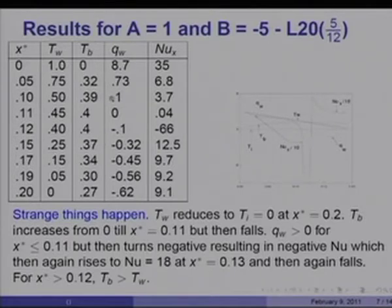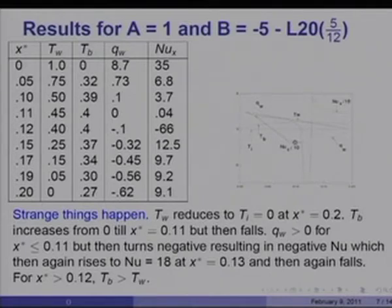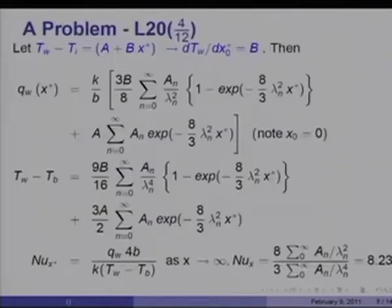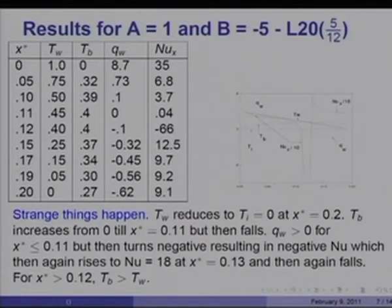One can work out solutions for a variety of A and B values to see what happens. As I said, one could generate these solutions also for a circular tube, because the A_n and λ_n values remain the same for a circular tube. Therefore, for such a case one can again carry out the integrations shown here and evaluate the Nusselt number for a circular tube. Indeed, very strange variations of Nusselt number occur when the wall temperature varies axially.